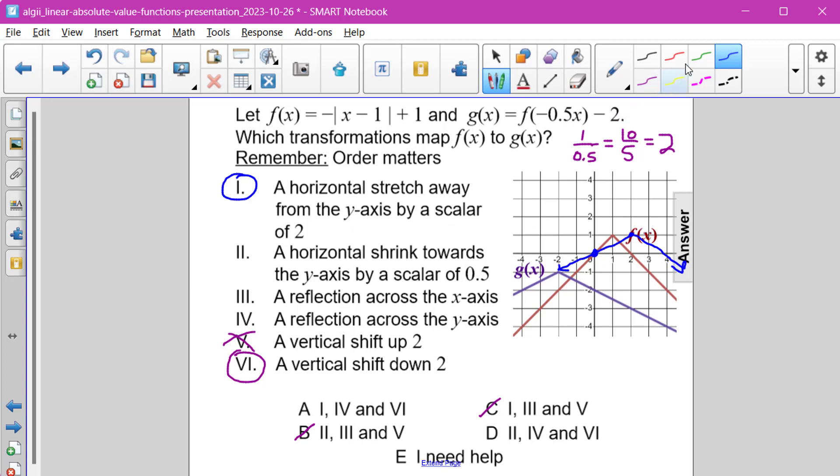And then what it's doing is it is then reflecting over the y-axis. So we're then going to have this function right here. And then finally, we're doing that vertical shift down 2 units to get to where g of x is located.